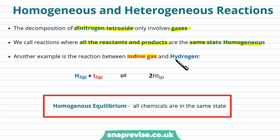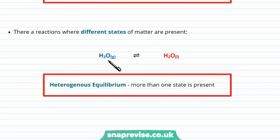Another example of a homogeneous reaction is the reaction between iodine gas and hydrogen: hydrogen is a gas, iodine is a gas, and it forms hydrogen iodide, which is also a gas. So a homogeneous equilibrium is one where all the chemicals involved are in the same state. Now let's contrast this with reactions where different states of matter are present — for example, water in its gas form becoming water in its liquid form. This is called a heterogeneous equilibrium, where more than one state of matter is present.